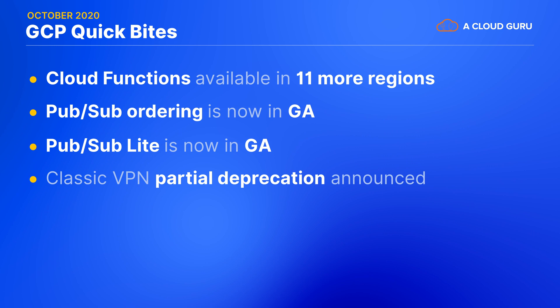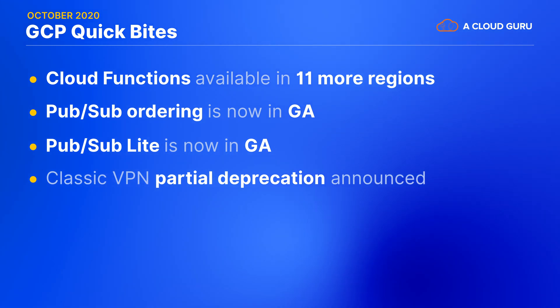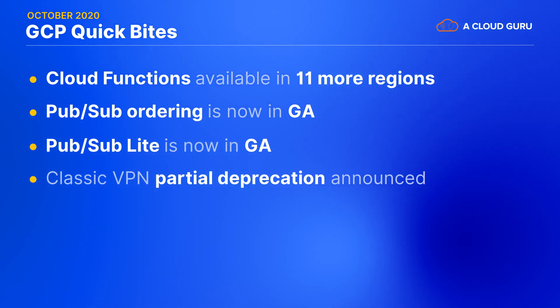Cloud VPN partial deprecation has been announced. Google has announced a partial deprecation of classic VPN, and from October 2021 there will be no classic VPNs whatsoever, although your existing ones will continue to work. So now is a good time to think about upgrading to the new HA VPNs. Companies running deprecated technology is always a risky thing in case something breaks, so this is a good chance for companies using classic VPNs to think 12 months ahead.